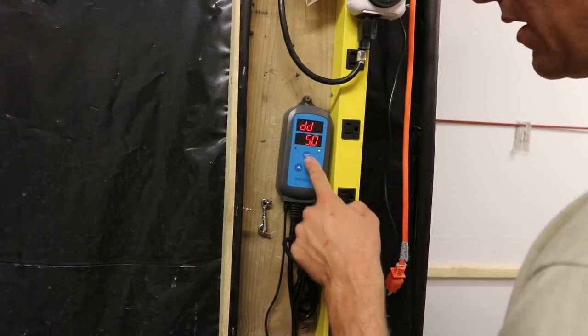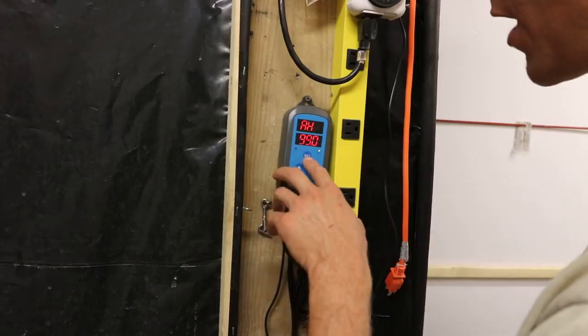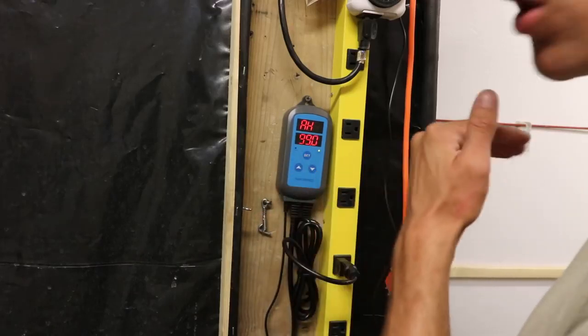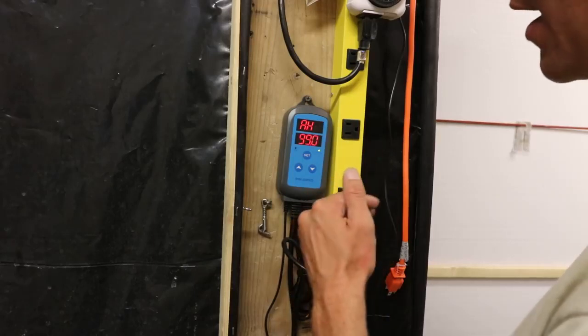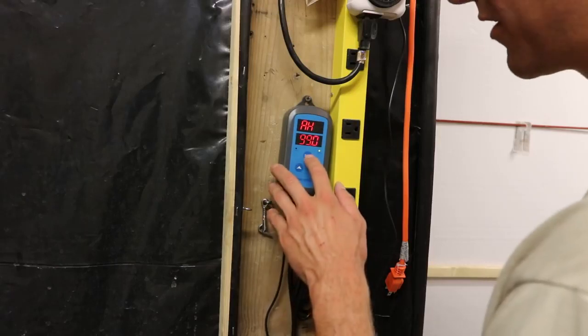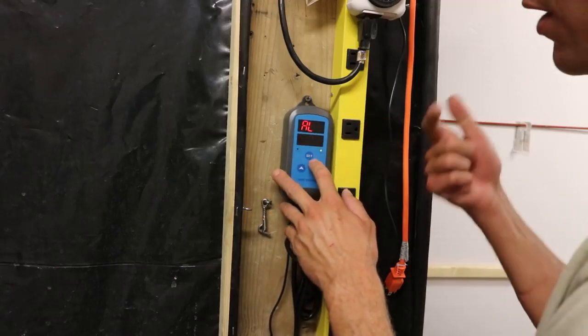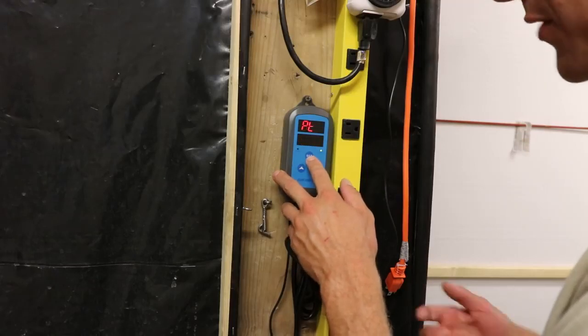Alright. DD - that's dehumidification. Don't worry about that setting, you're not using it. AH - that's your alarm high. I'm setting it at 99. You can set it at 98, whatever you want. So whenever you want the alarm to kick on saying 'hey, something's wrong.' That's the low alarm. Alarm low. 50 is the highest you can go, so that's what I have it at.